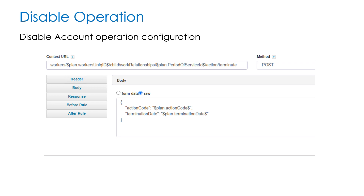The next operation is the disable operation. This operation is used to disable an account in Oracle Fusion. As part of the context URL, we will be passing the worker's unique ID and period of service ID, where worker's unique ID is the worker's unique identifier of the account to be disabled, and period of service ID is the period of service identifier of the account to be disabled. The HTTP method we will be using is POST. As part of the request body, we will be passing attributes such as action code and termination date.